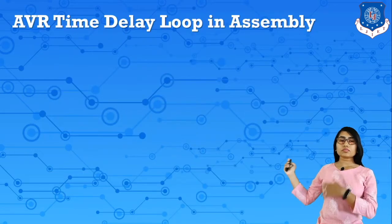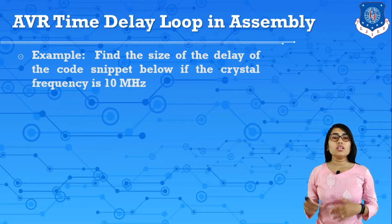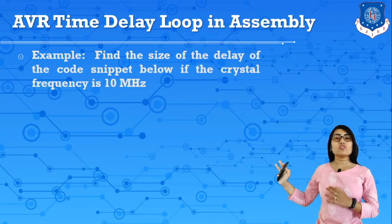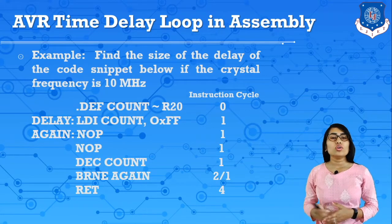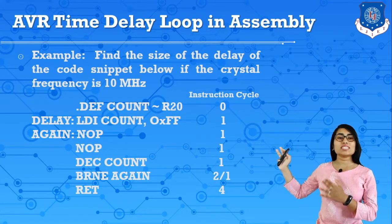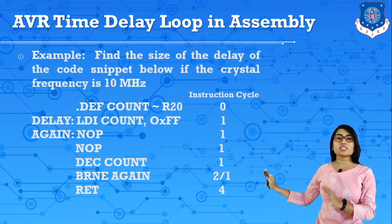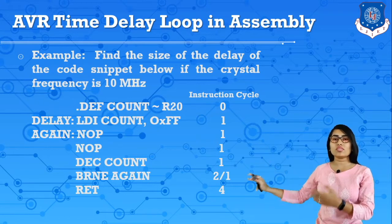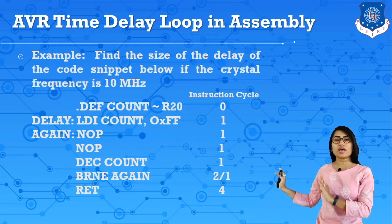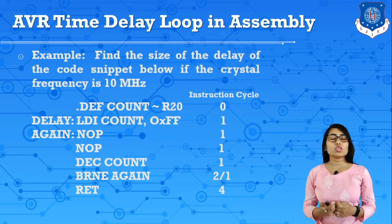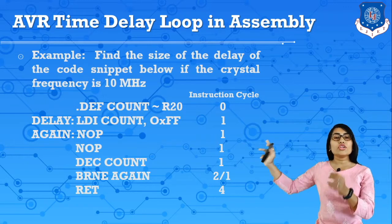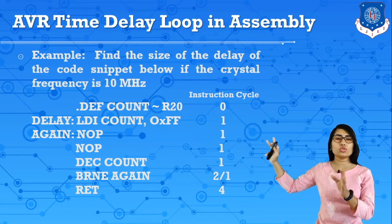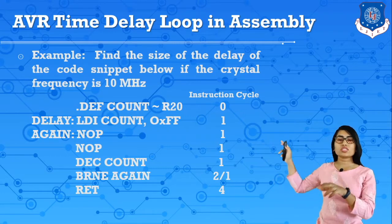Here we have an example: find the size of the delay of the code below, given a crystal frequency of 10 MHz. The code is given, and the instruction cycles shown are written by us. We have to calculate the size of the delay due to this code. First, '.def count R20' — due to the .def directive, there is no instruction cycle, so instruction cycle is 0.